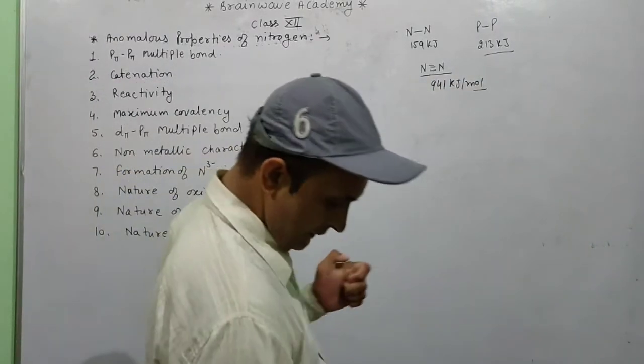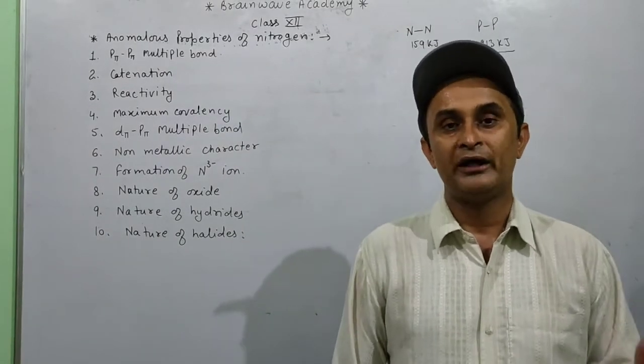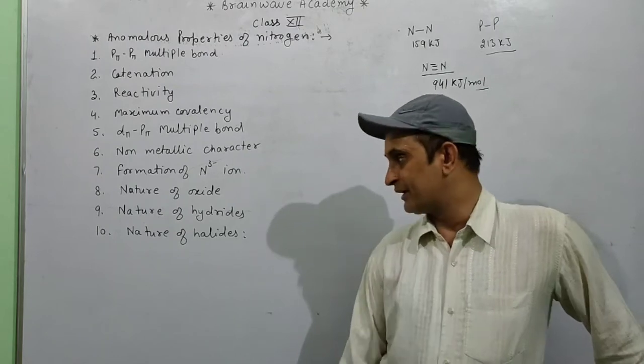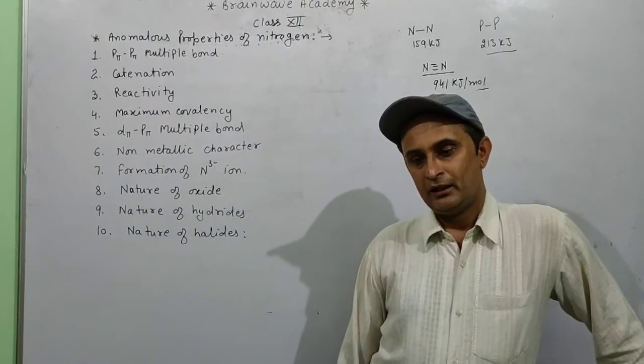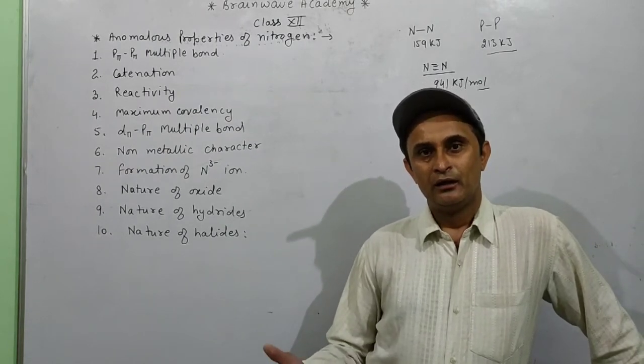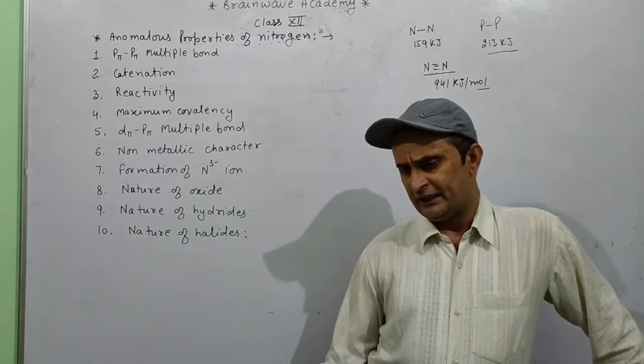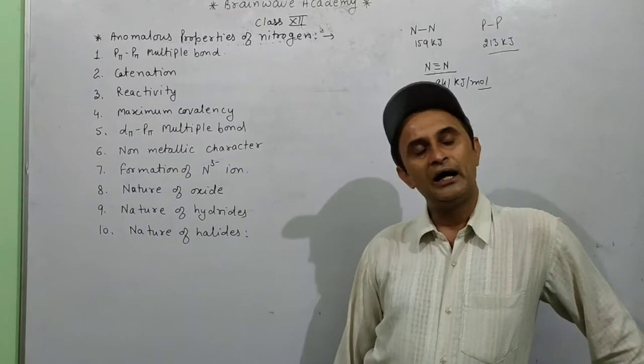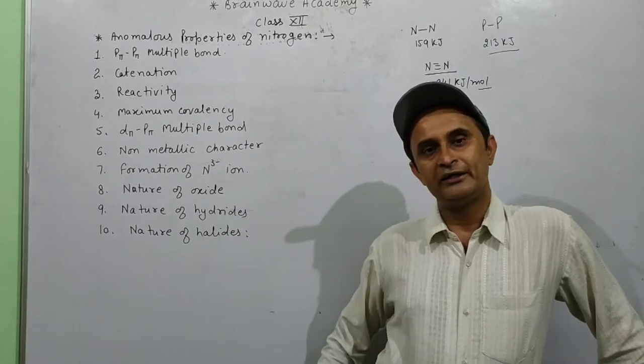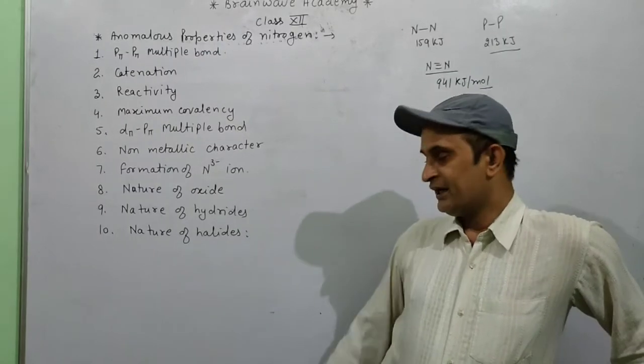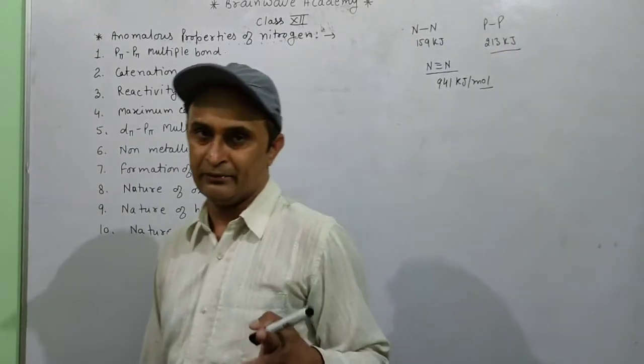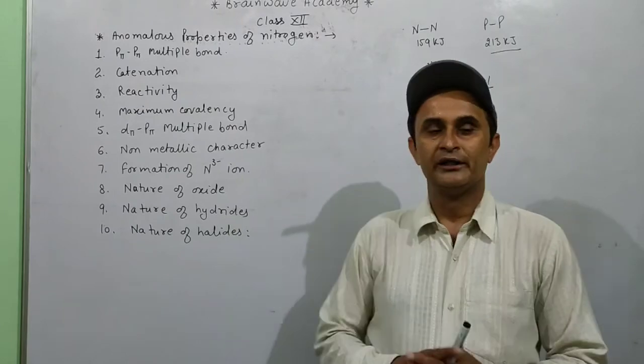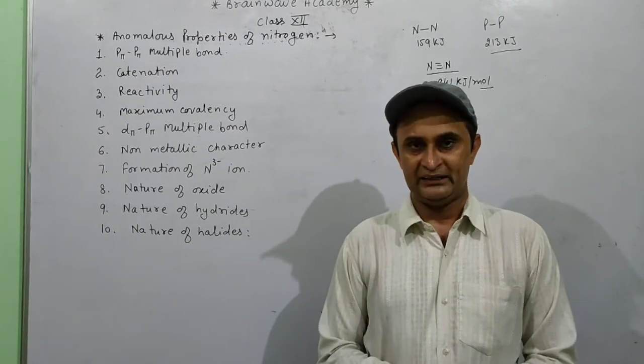Nature of oxides: nitrogen can form 5 oxides and they are found in monomeric form, but other group member oxides are found in the form of dimer. Nature of hydrides: hydrides of nitrogen have high melting and boiling point due to intermolecular hydrogen bonding. Nature of halides: halides of nitrogen are least stable. Only NF3 is stable. Other halides of nitrogen are unstable, but other group members can form stable halides.